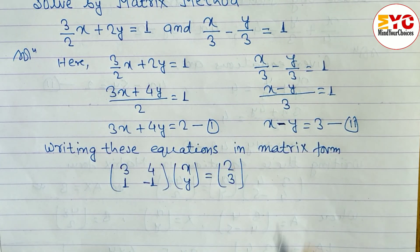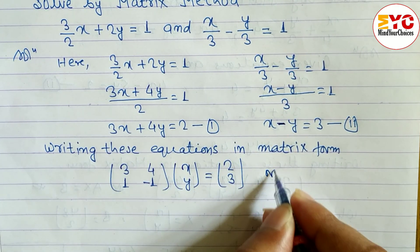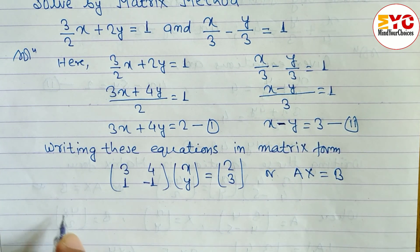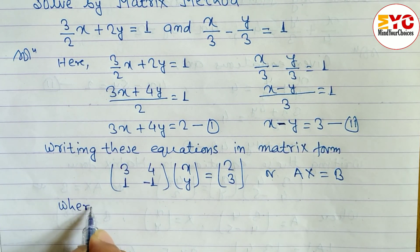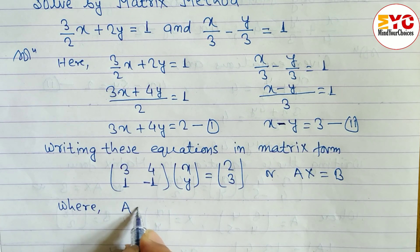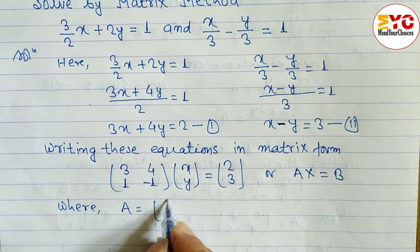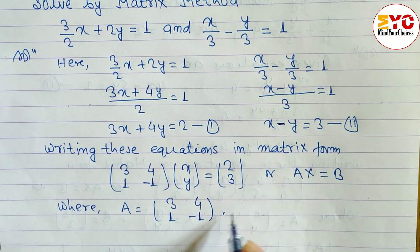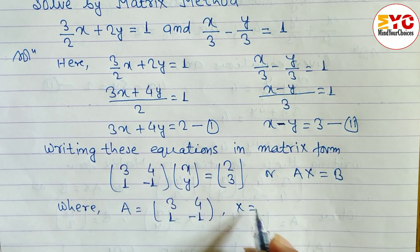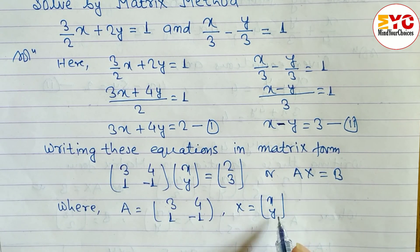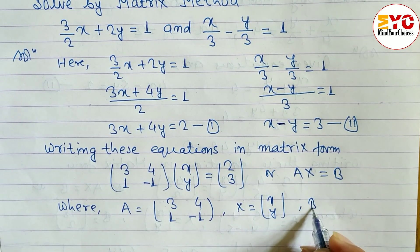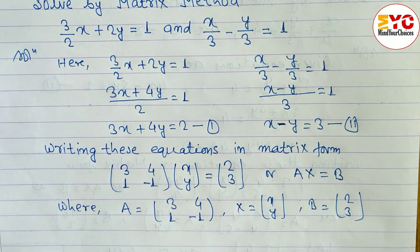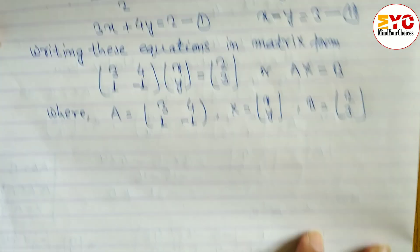This is the matrix equation AX = B, where A = [[3, 4], [1, −1]], X = [x, y], and B = [2, 3]. Hope you understand up to here. Now we have to check whether A is a singular or non-singular matrix by finding the determinant of A.